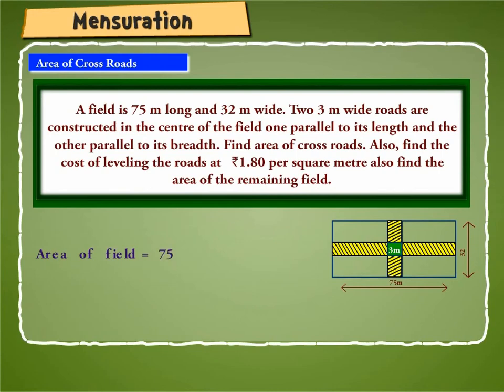Now, area of field is equal to 75 into 32 or 2400 square meter. Therefore, area of remaining field is equal to 2400 minus 312 square meter is equal to 2088 square meter.